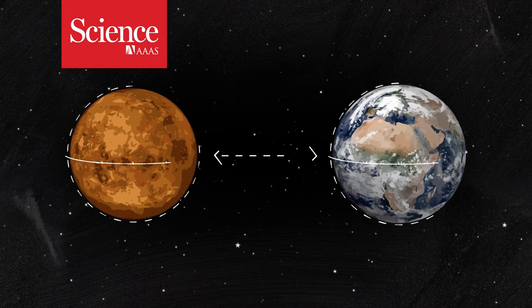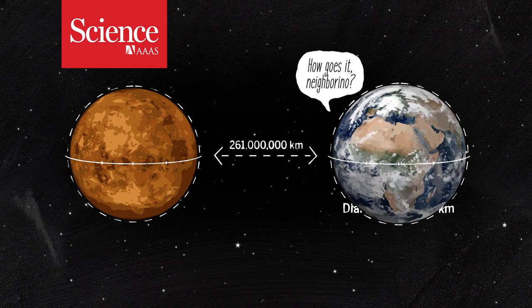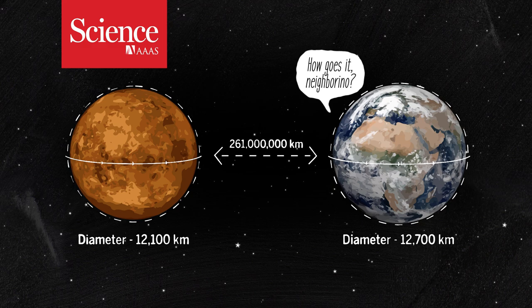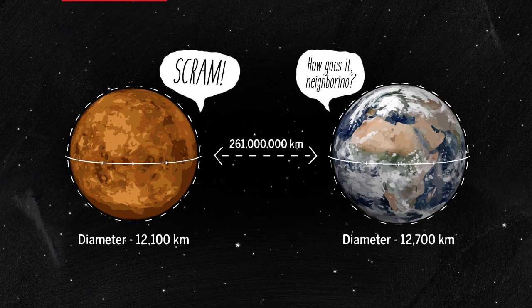Venus is Earth's nearest neighbor. It's closest to Earth in size and composition, yet something clearly went awry.